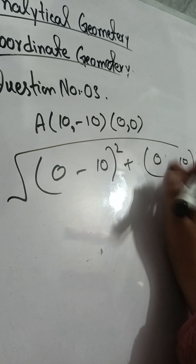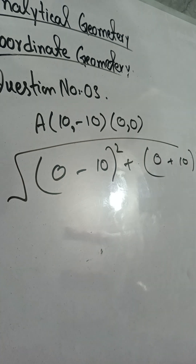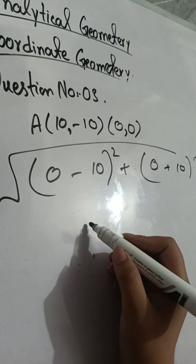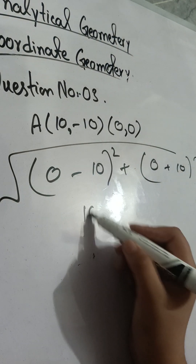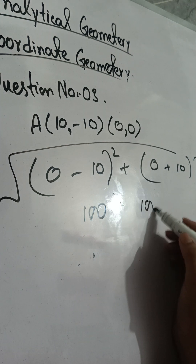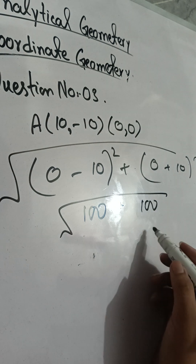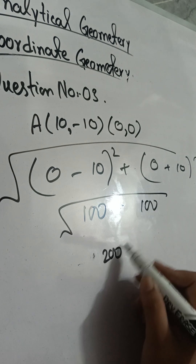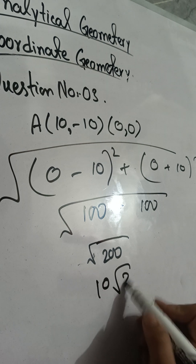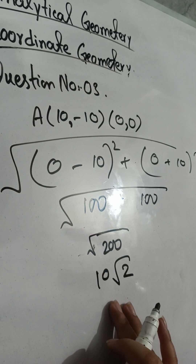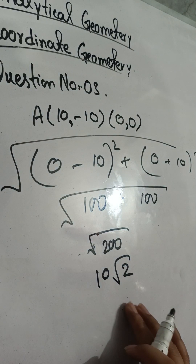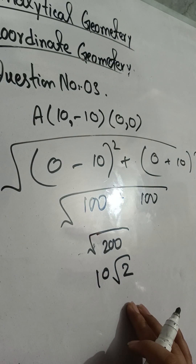So I will directly put them in as positive. Zero minus 10 squared equals 100. Plus zero minus negative 10 — 10 squared equals 100. Adding gives 200. The square root of 200 equals 10 root 2, which is approximately 14.1. So the point (10, -10) is not at a distance of 15 from the origin.